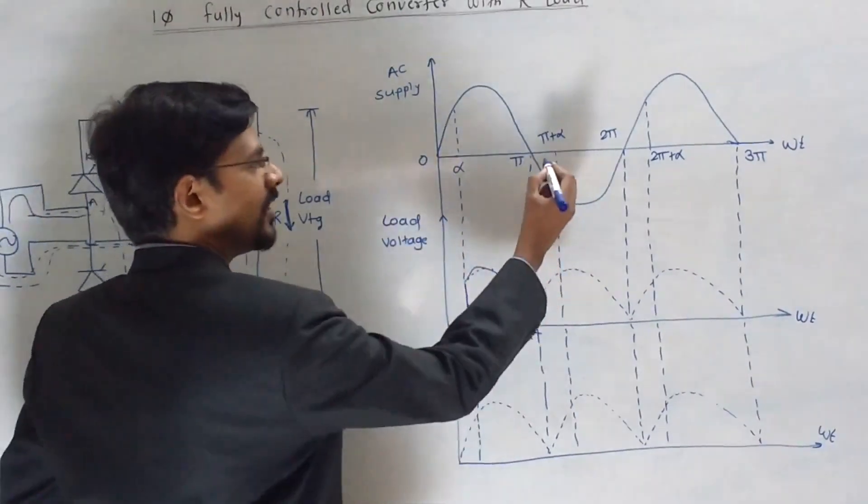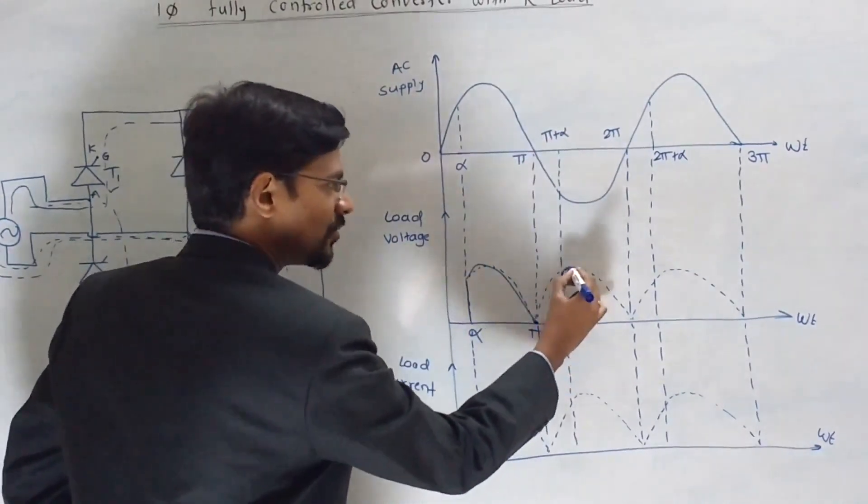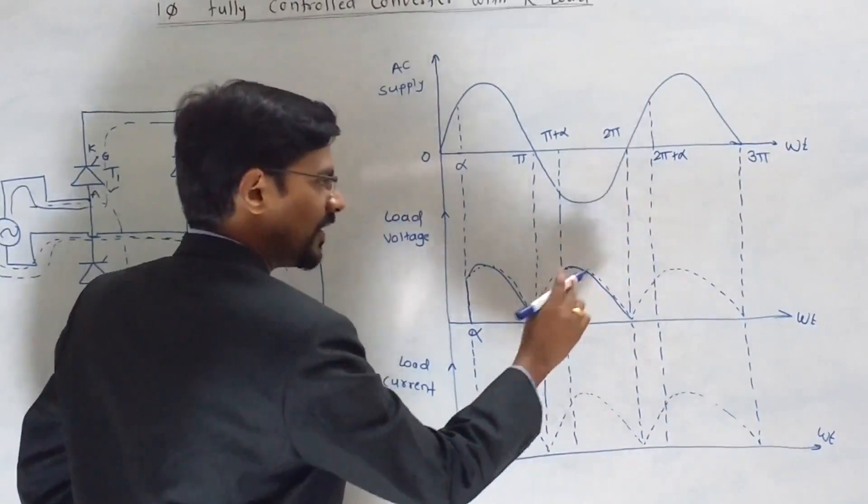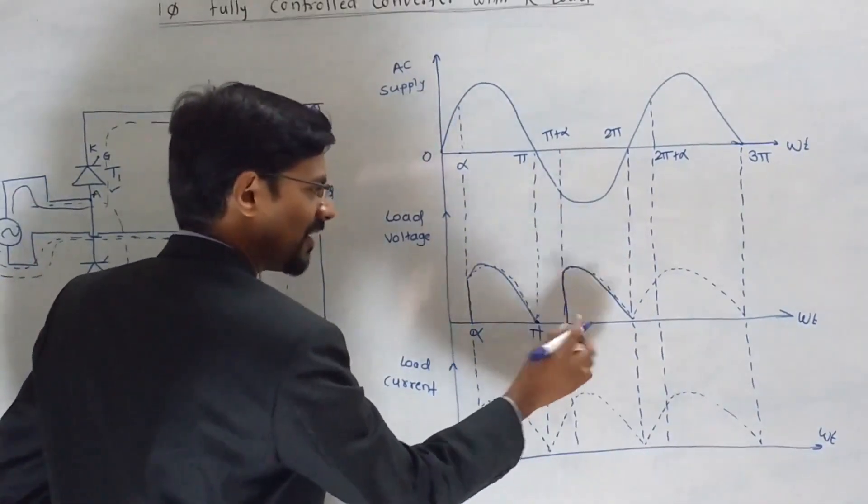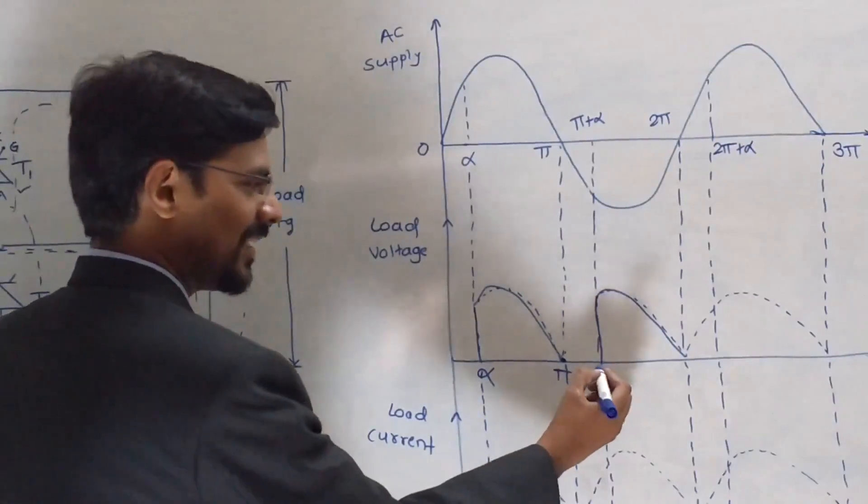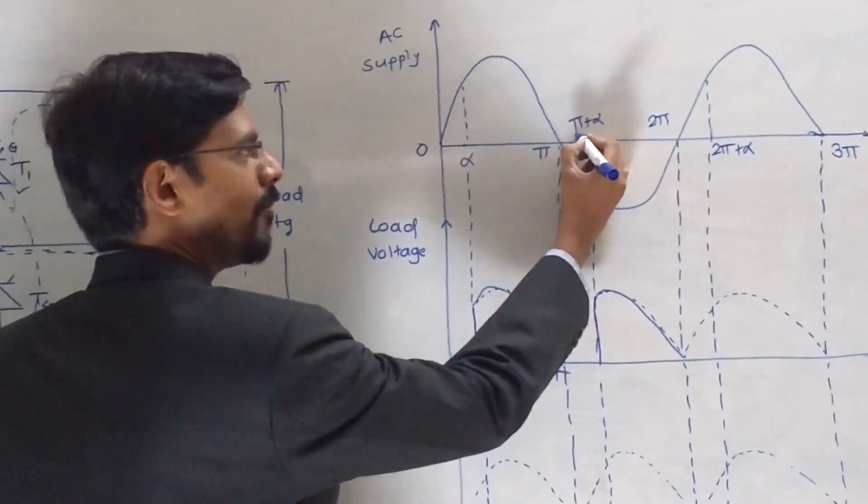And it will start from pi plus alpha. Because we are considering that this SCR is going to turn on at some firing angle alpha. So it will start conducting at firing angle alpha. That means from pi plus alpha.